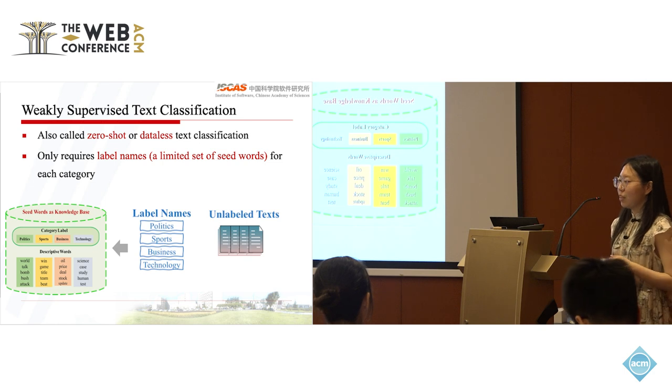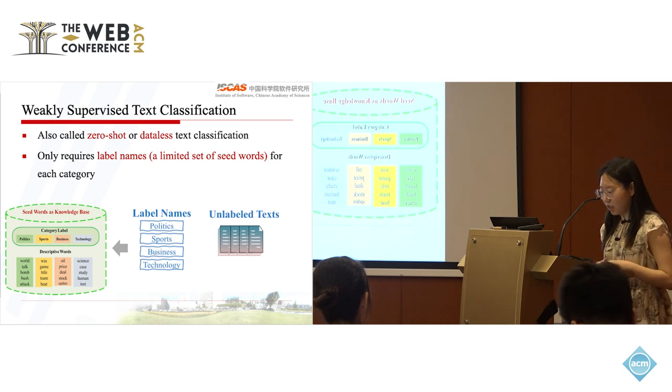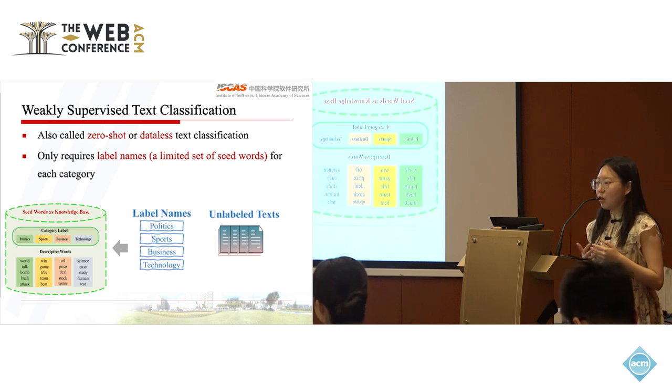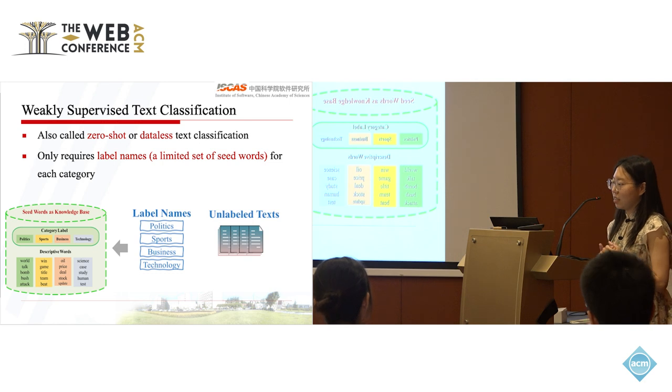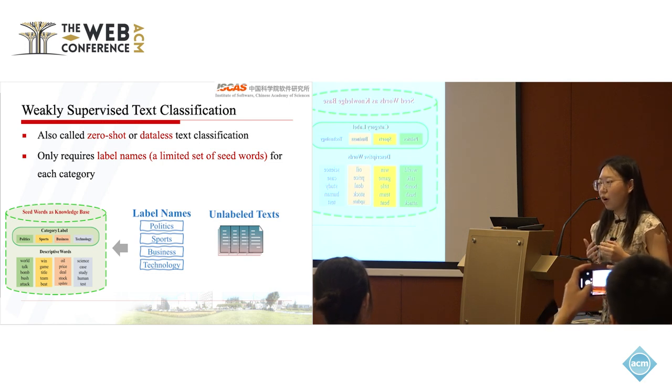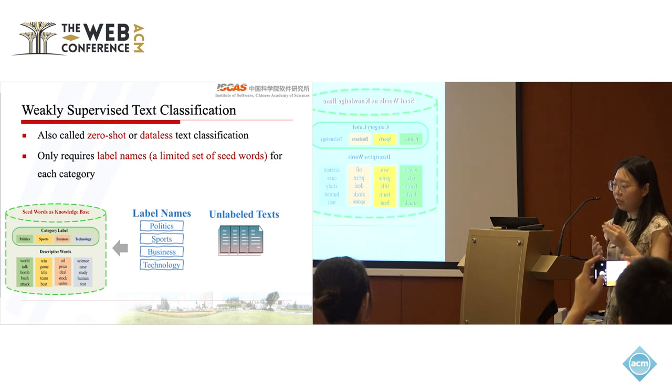First, let me introduce the Weakly Supervised Text Classification task. WSTC, also called zero-shot or dataless text classification, only requires label names or limited seed words for each category and can greatly reduce the cost of annotation, especially in the dynamic and open web environment.